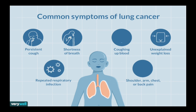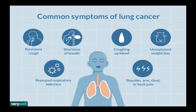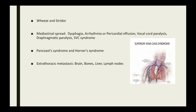Coming to the clinical features, common symptoms of lung cancer include persistent cough. In the initial days, the cough is usually dry. If there is a secondary infection, the cough can be productive. Patients can also present with shortness of breath, hemoptysis, unexplained weight loss, anorexia, and repeated respiratory infections. Centrally placed tumors can cause bronchial obstruction, and the patient can present with wheeze and stridor. Stridor is commonly seen if the primary tumor is in the larynx, trachea, or the central bronchus.